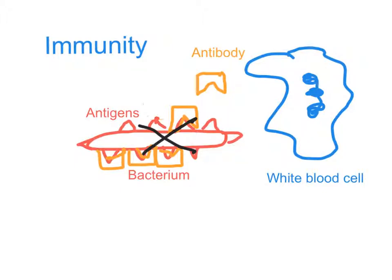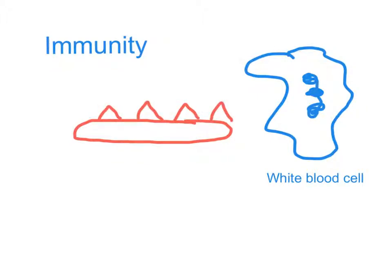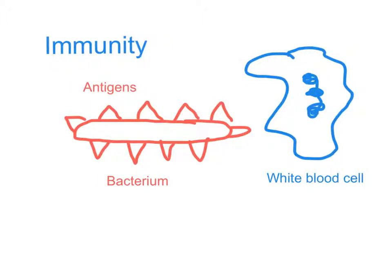But here's the really clever bit. Some years later, the same disease comes back — it might be measles, for example. So the same sort of bacterium returns again, with the same shape antigens on its surface. Now the difference this time is that special white blood cells that have stayed in the body instantly recognise this particular sort of antigen again.